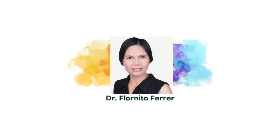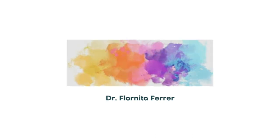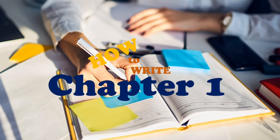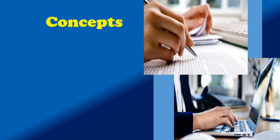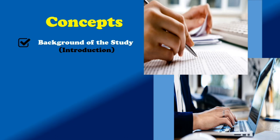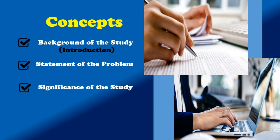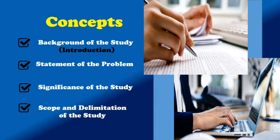Okay, ladies and gentlemen, this is Dr. Freyr, your professor in research and social studies. Today, our topic is on how to write your chapter 1. There are concepts that you have to consider in writing the first chapter of your paper: one is the background of the study or the introduction part of your research; second is the statement of the problem; third is the significance of your study; and last is the scope and the delimitation of your study.